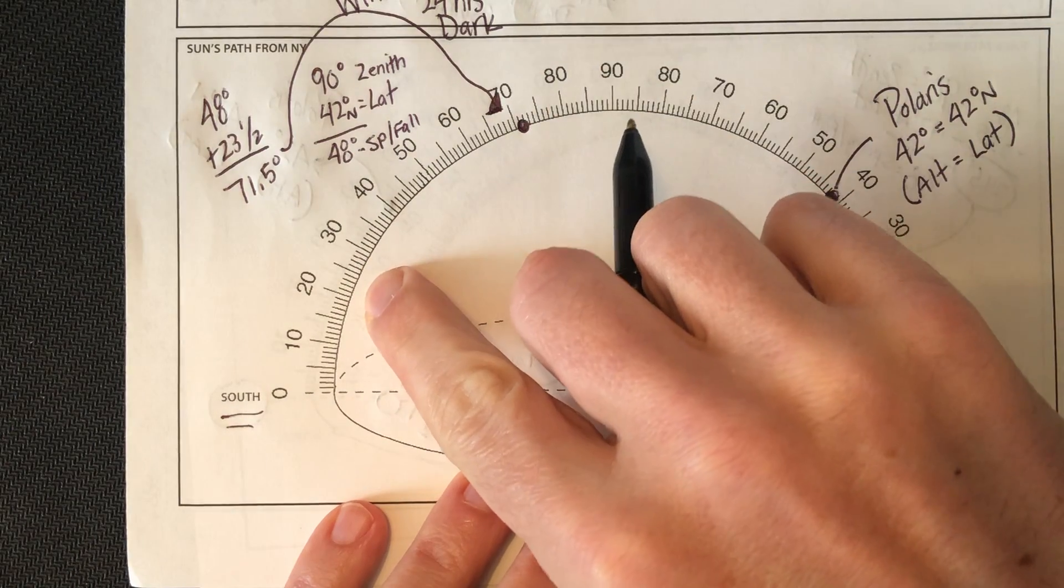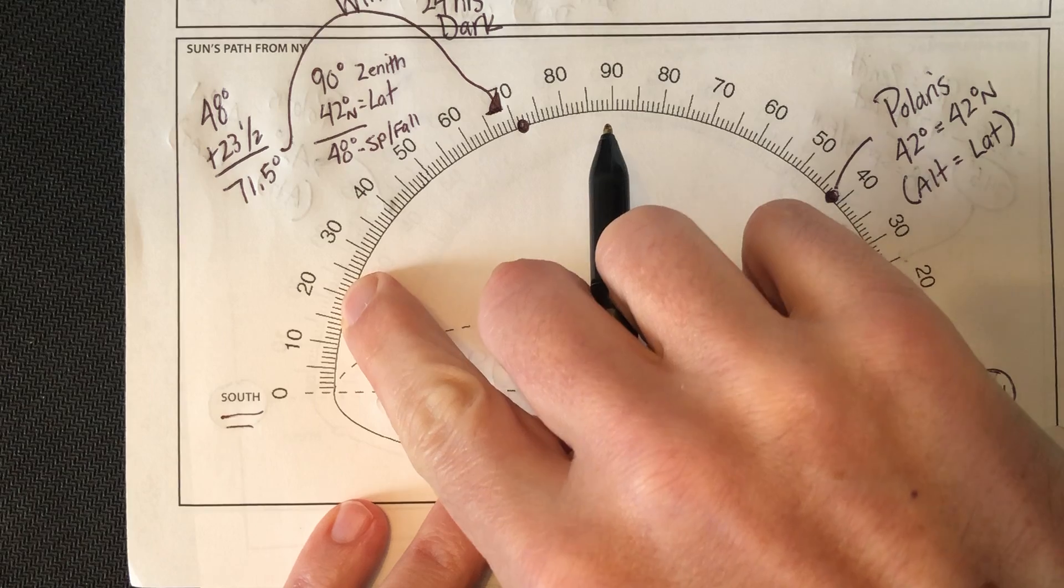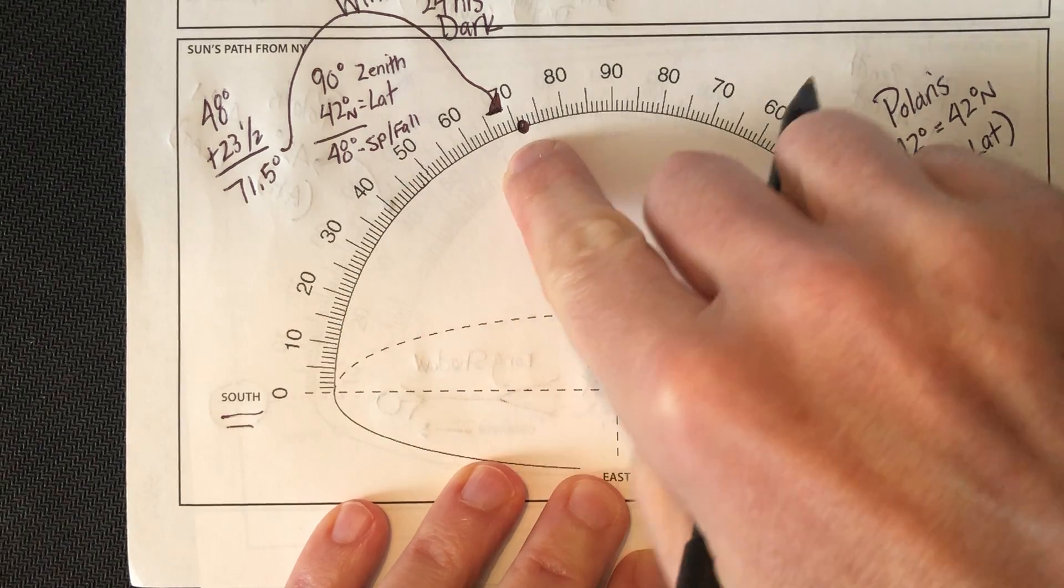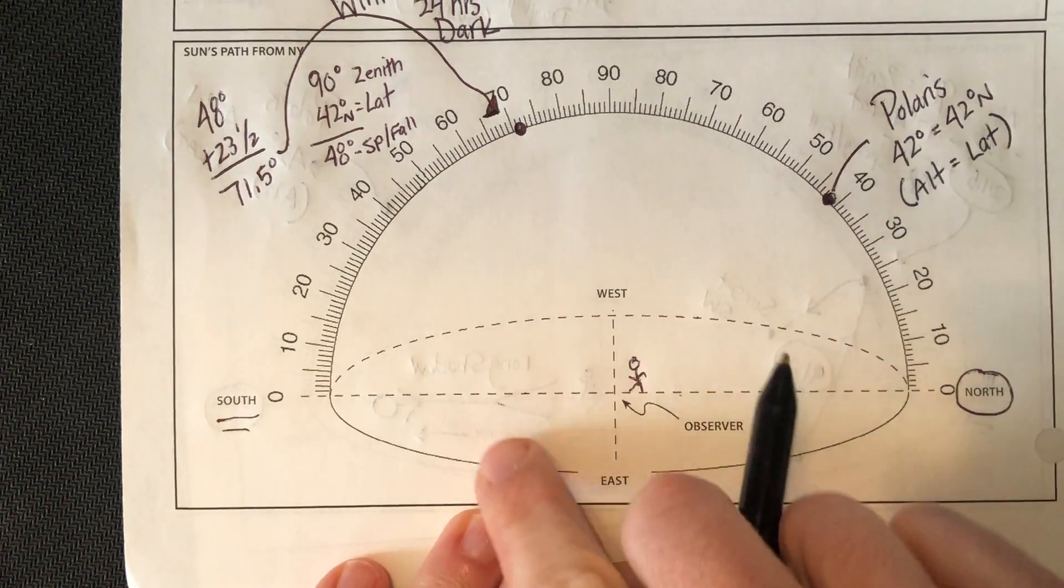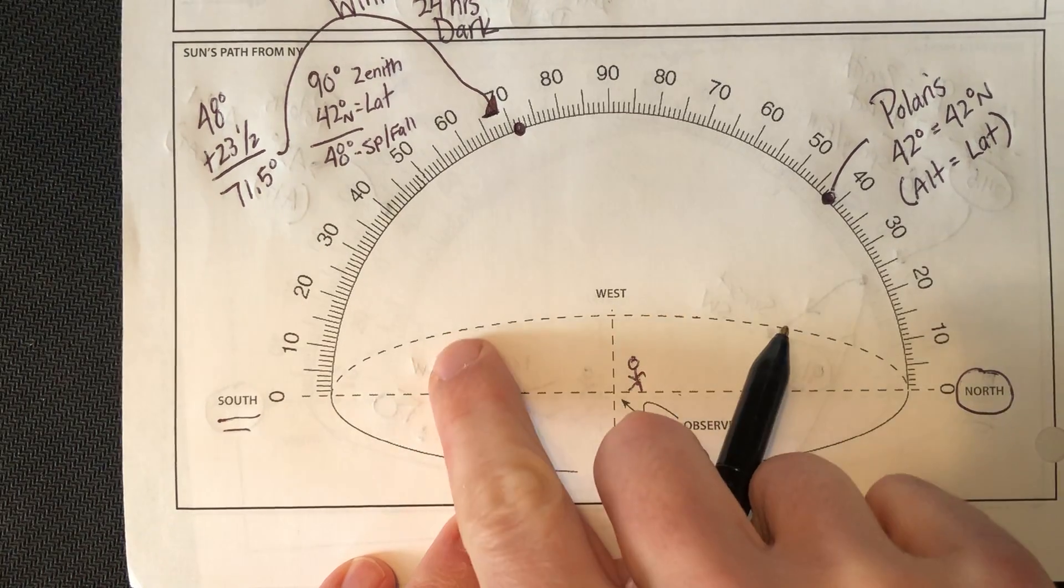Significantly higher than in winter. Go back to my other video. The winter time path is only 24.5. Here, it's 71.5. In winter, it rose in the southeast and set in the southwest.